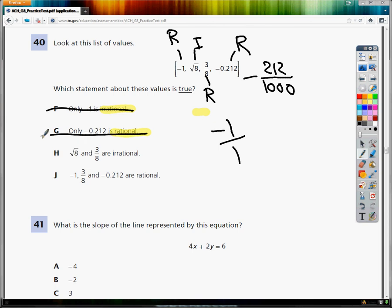H says the square root of 8 and 3 eighths are both irrational. But 3 eighths is not irrational, it's a nice fraction. J says negative 1, 3 eighths, and negative 0.212 are all rational. And that is true. So the answer to number 40 is J.